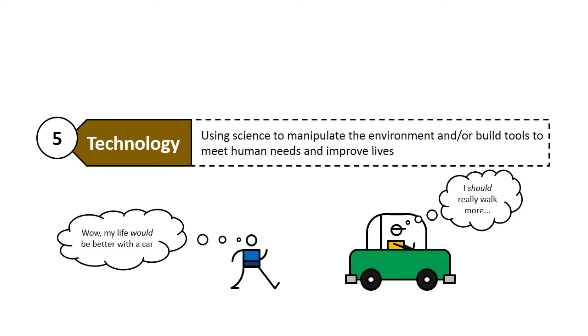And finally, we have a frequently misunderstood term, technology. Technology is just where we use science to meet human needs and improve our lives. It's not the same thing as science. Science is not necessarily trying to meet human needs or improve anybody's life or build a new tool. It's really just trying to explain, trying to understand.